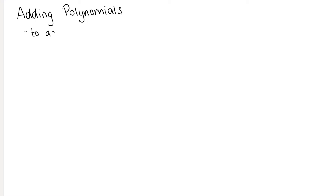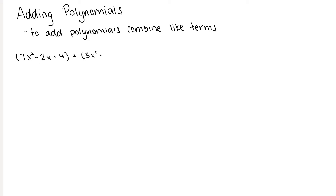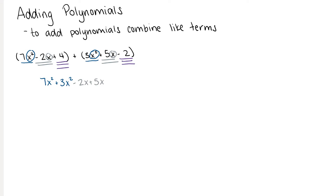Next, let's go over adding polynomials. To add polynomials, combine the like terms. Like terms are terms that have the same variable and same exponent on that variable. For example: 7x squared minus 2x plus 4, plus 3x squared plus 5x minus 2. We group 7x squared and 3x squared, negative 2x and 5x, and 4 and negative 2 as like terms, then combine to get 10x squared plus 3x plus 2.